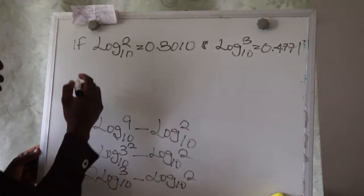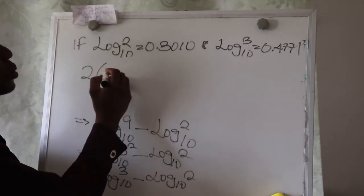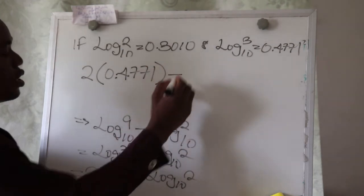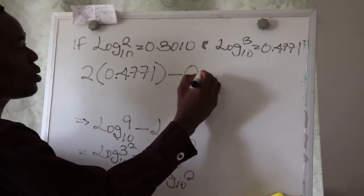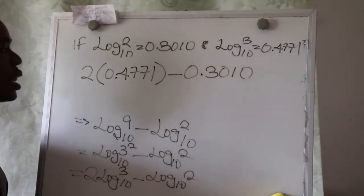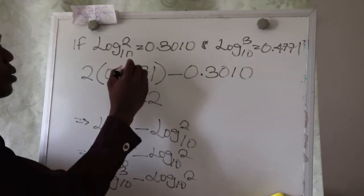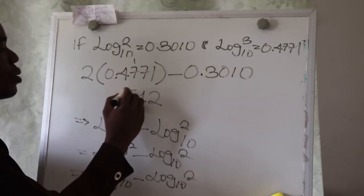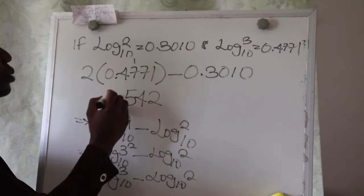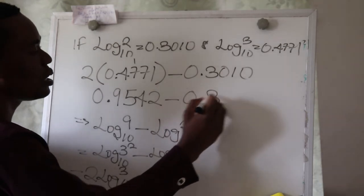Let's put these values into the equation. We'll have 2 times 0.4771 minus 0.3010. When you multiply: 2 times 1 gives 2, 2 times 7 gives 14 write 4 carry 1, 2 times 7 gives 14 plus 1 gives 15, 2 times 4 gives 8 plus 1 gives 9. So this gives us 0.9542 minus 0.3010.